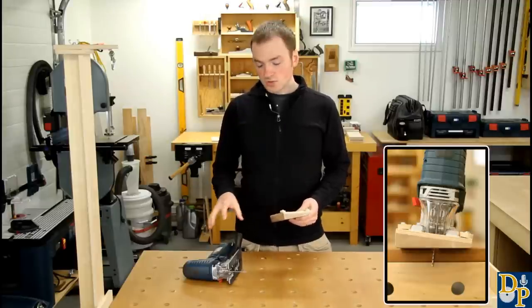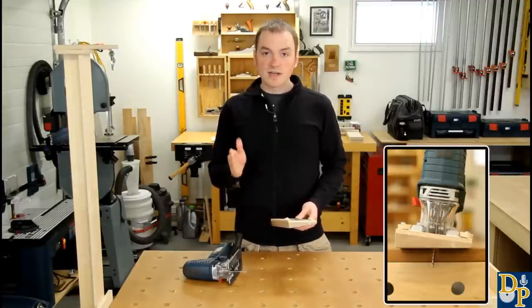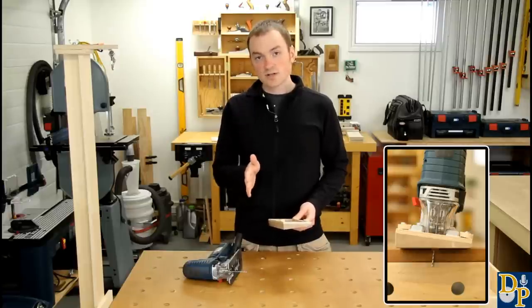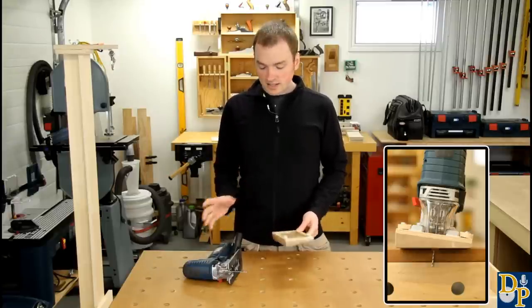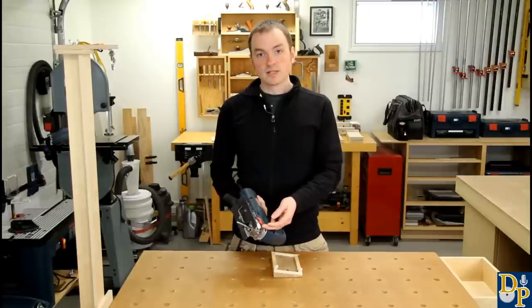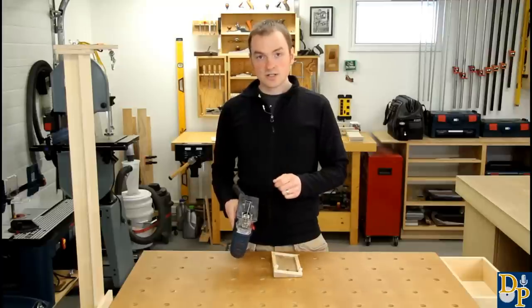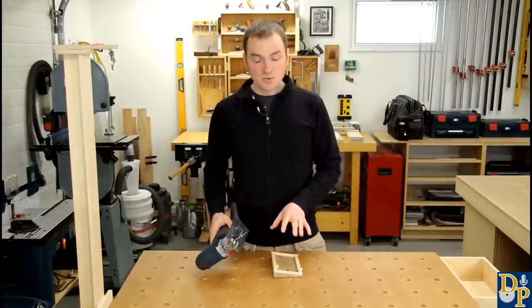Second, it avoids having to actually tilt the base on your jigsaw, so if you have your blade set up nice and square to the base you don't lose that setting. Some saws are easier to adjust than others—this one just has a lever lock so it's pretty quick and easy. Some of them you've got to get the allen wrench out, so this avoids having to do that since the bevel is built right into the base.